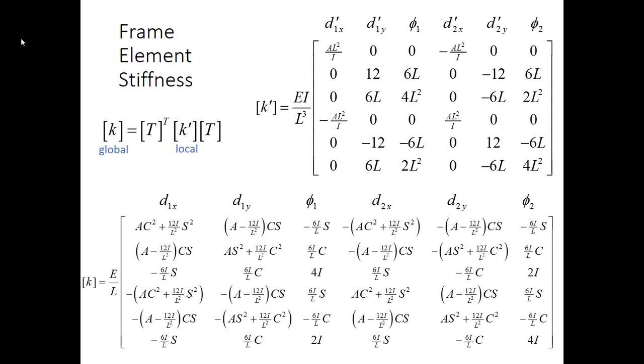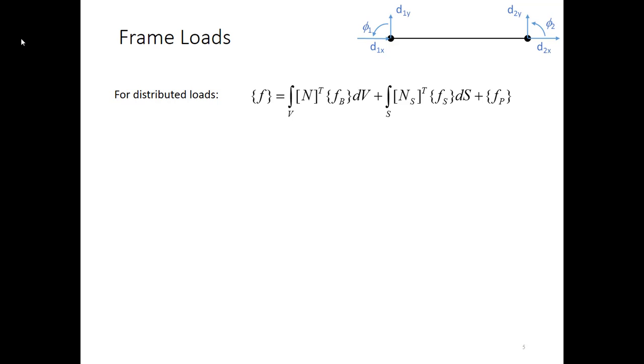So this matrix now we can use for any frame element in 2D space and it will give us the stiffness matrix without having to go through the matrix multiplication.